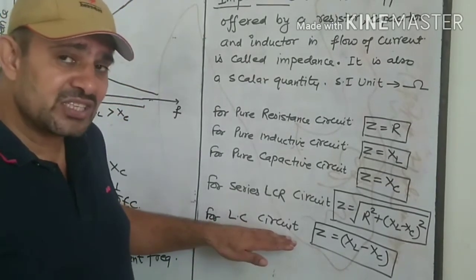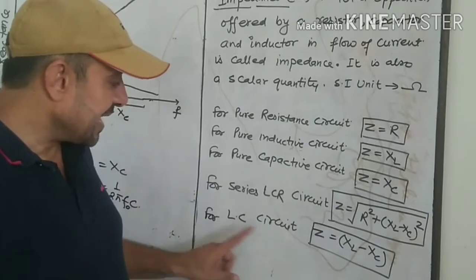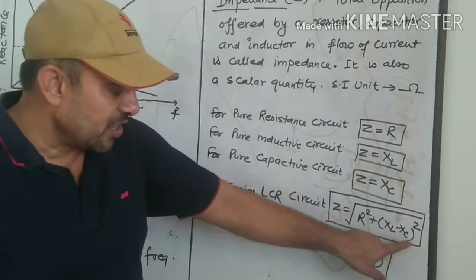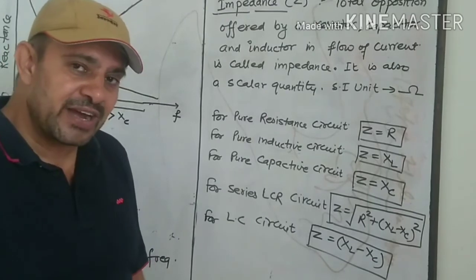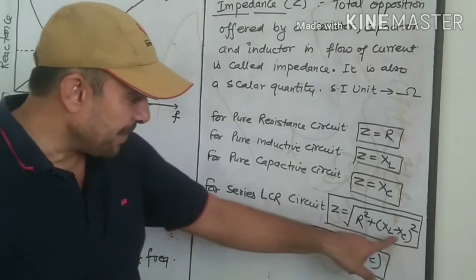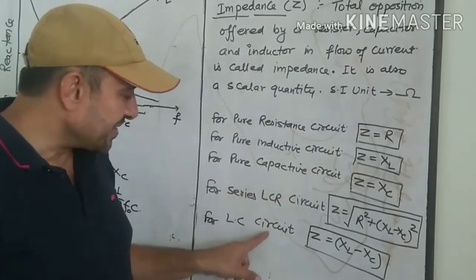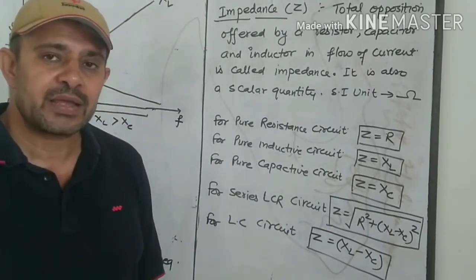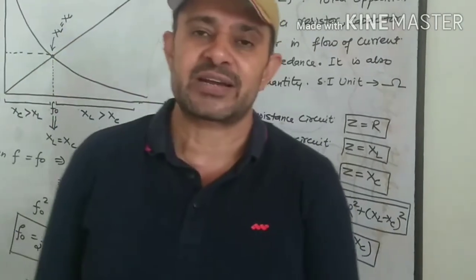For an LC circuit with no resistance, impedance becomes Z = |XL − XC| since R is zero. For an RL circuit where capacitance is absent (XC = 0), impedance is Z = √(R² + XL²). For an RC circuit where inductance is absent, impedance is Z = √(R² + XC²). This covers everything about reactance and impedance. Thank you.